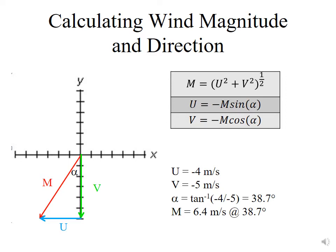Here in the xy-plane, we have a vector wind shown by the red arrow, going from the origin and coming from the northeastern direction to the southwest. We have m, which is the magnitude of that vector. That vector is composed of two components: the east-west component u, which is minus four meters per second, and the north-south component v, which is minus five meters per second. To calculate the magnitude of the resultant vector, you use the equation — the square root of u squared plus v squared. You can also use trigonometry to figure out angle alpha, which is the inverse tangent of minus four over minus five, giving 38.7 degrees.